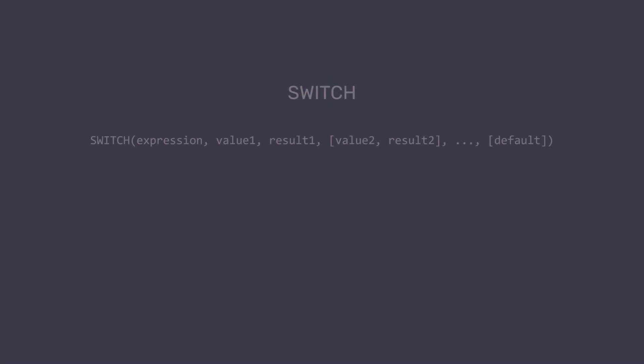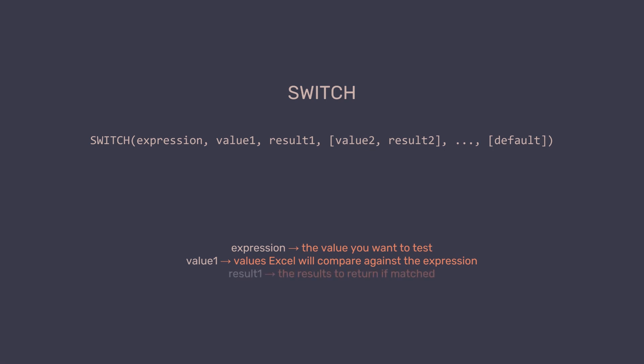Let's break down the switch function structure. The syntax looks like this. First, expression — the reference cell value or boolean expression that you want to test. Second, value1 — this is where the condition Excel will compare against the expression. Third, result1 — the output if value1 matches the expression.